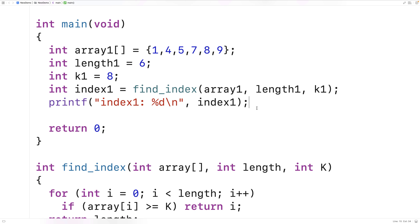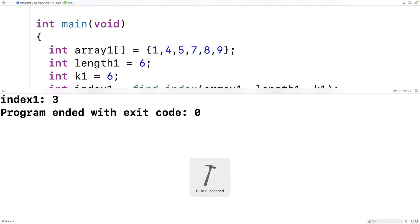What about something that's not in the array? So what about 6? So there is no value 6 in the array. But 6 belongs at index 0, 1, 2, 3. It belongs at this index here, 3. If we save this and run it, we get back index 3. So it appears to be working.